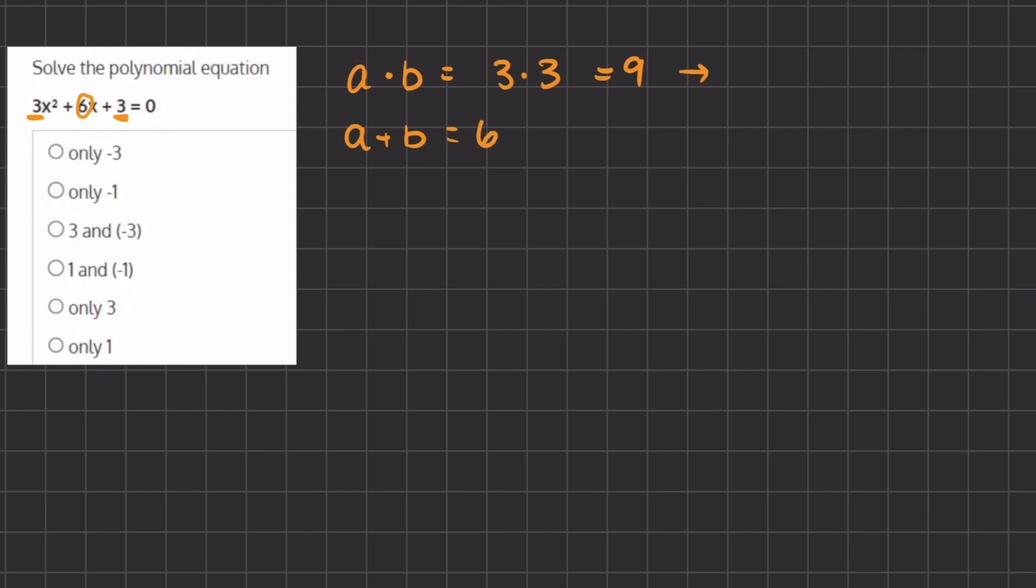In order to find these two numbers, we are first going to list the multiples of 9, so we have 1 and 9, 3 and 3. These two numbers if we add them will give us 6.